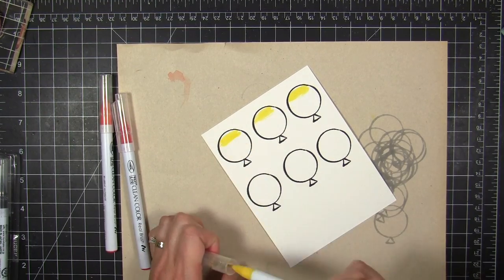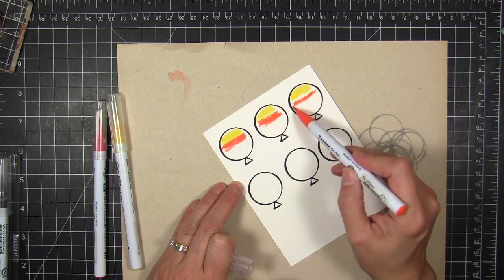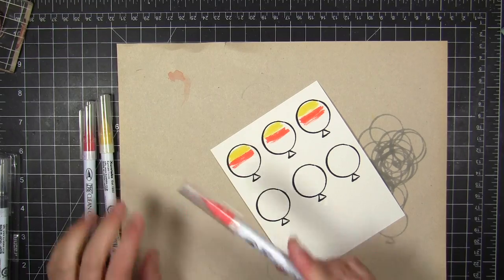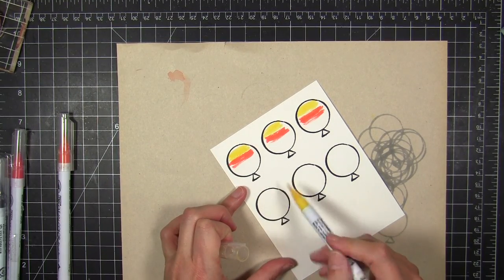I'm working with the Zig Clean Color Real Brush markers. I love these things because of the real brush nib. It's not like a marker tip. It's very unusual and it's fun to use for watercolor effects.